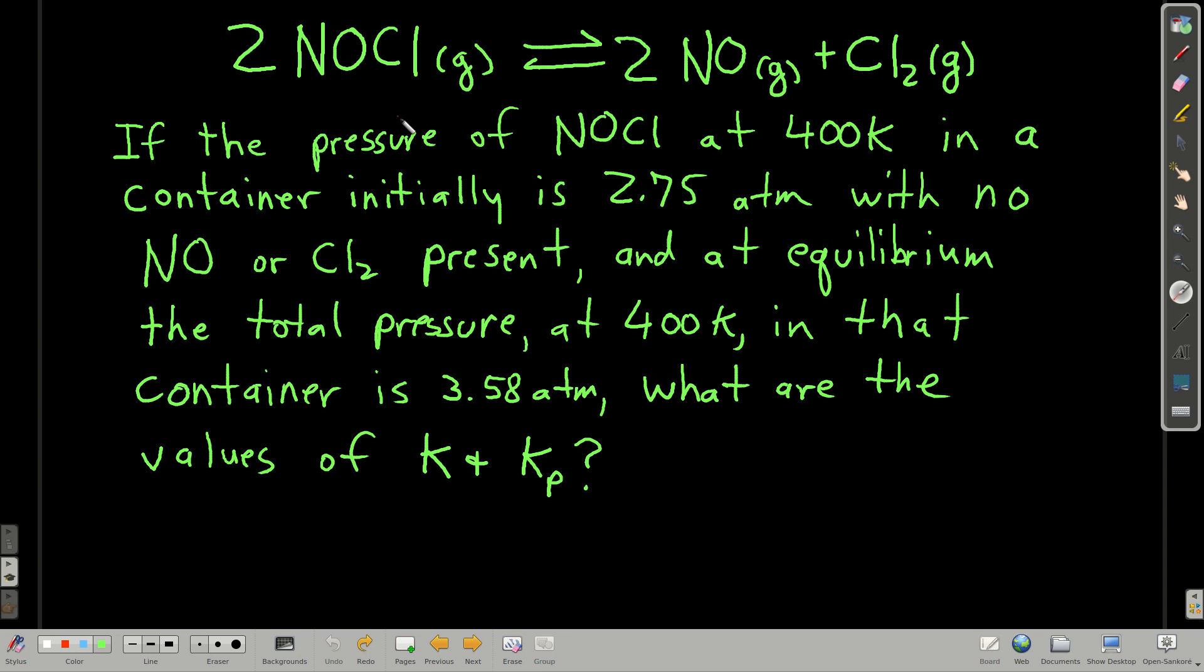So here we go. Nitrosyl chloride decomposes into nitrogen monoxide and chlorine gas. These are all gases here. So let's say if we start out with the pressure of nitrosyl chloride at 400 Kelvin in a container where the pressure of just the nitrosyl chloride with none of the products yet is 2.75 atmospheres. And then we let it react. We let it get to equilibrium. And then the total pressure at the same temperature in that same container after equilibrium is achieved is 3.58 atmospheres. What are the values of K and Kp?